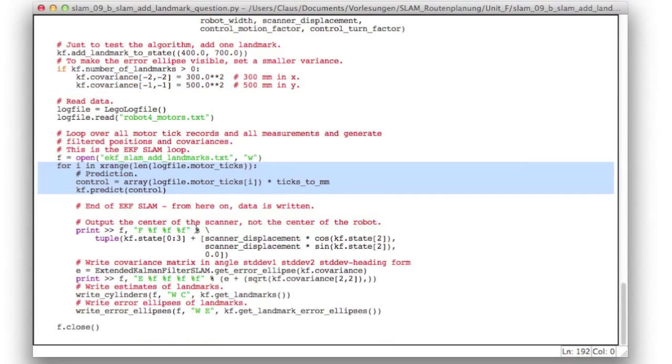Now in the main part, nothing changed in the Kalman filter. But down here, I added two calls, which will write out all the cylinders of the landmarks and their associated error ellipses. This uses write cylinders and write error ellipses. And those two functions are imported at the beginning of the code.